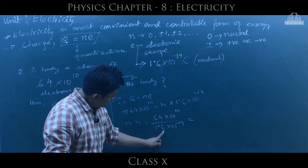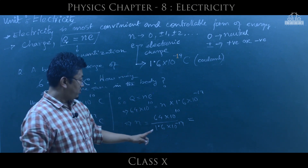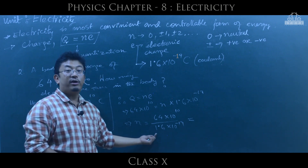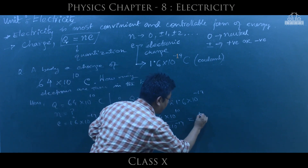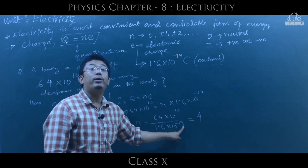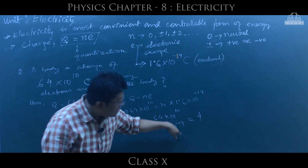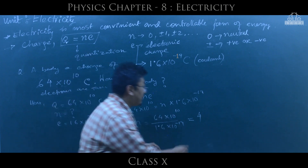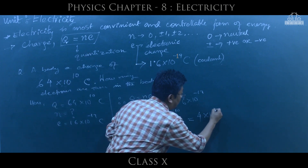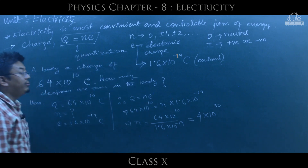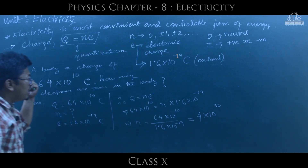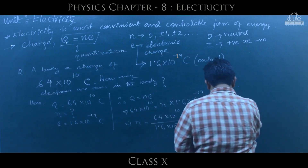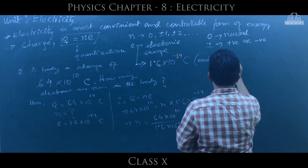Solving the division: 64 divided by 1.6 gives 40, and 10 to the power minus 10 divided by 10 to the power minus 19 gives 10 to the power 9. So n equals 40 into 10 to the power 9, which means there are 4 into 10 to the power 10 electrons in the body.